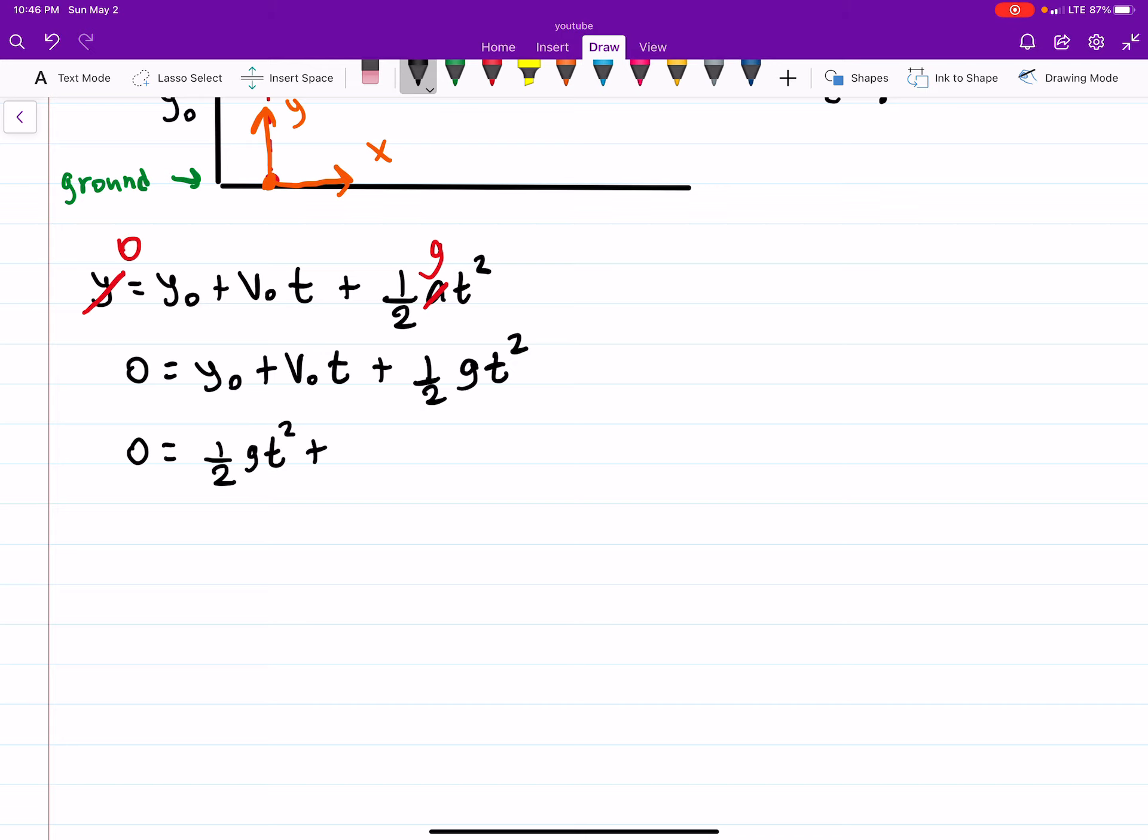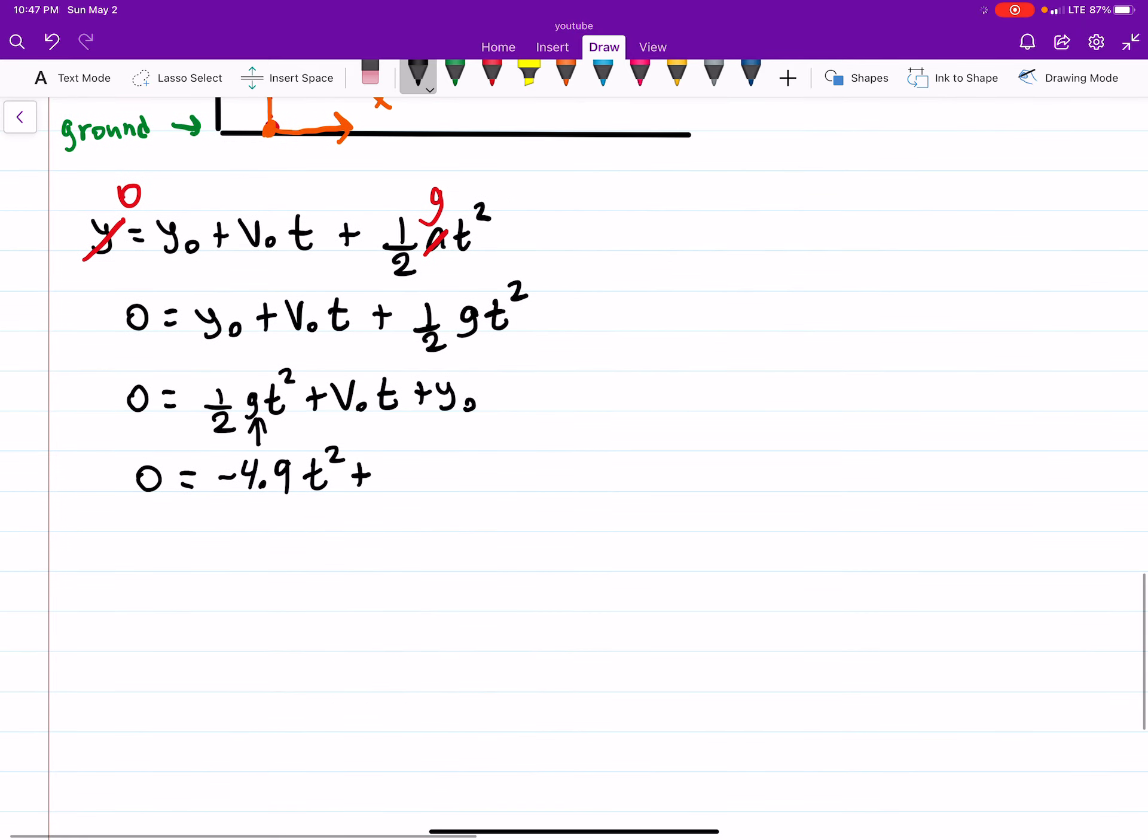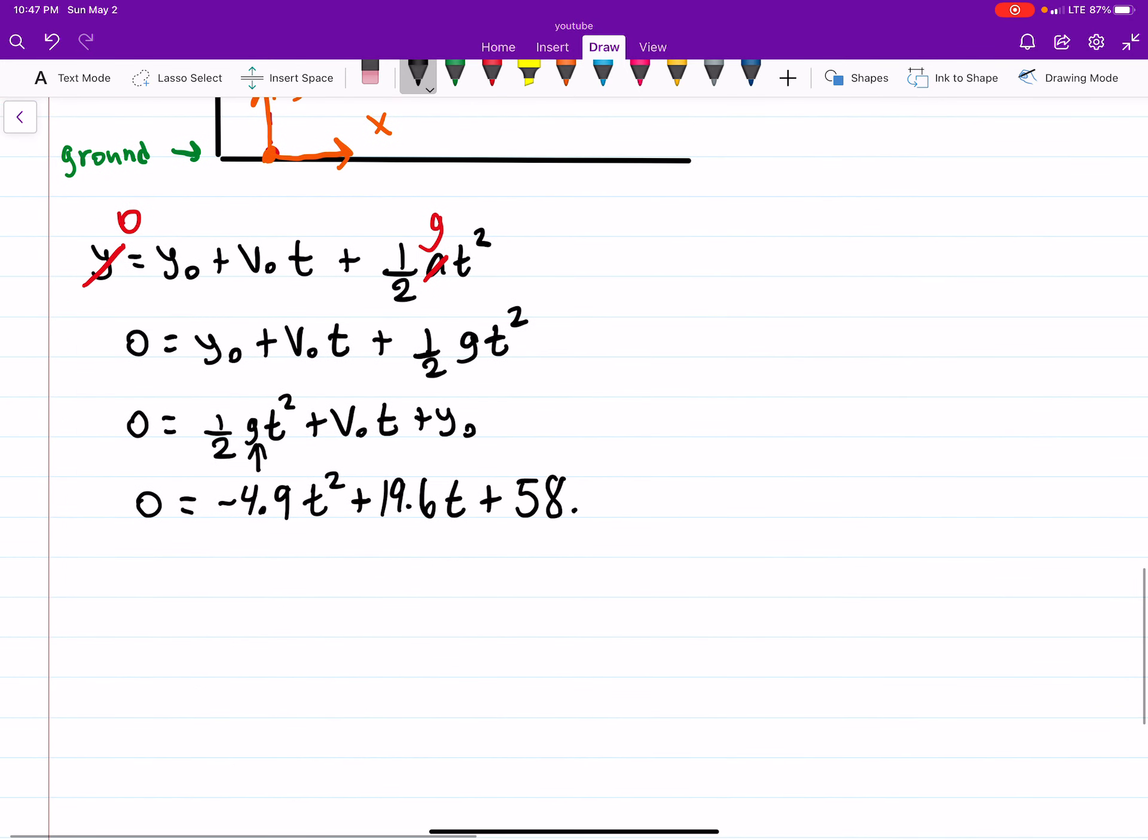So we have 0 equals Y-naught plus V-naught T plus 1/2 GT squared. I'm going to rewrite this from descending order, which you might be a little bit more familiar with. Our power of T is going down. This is just a quadratic. If we plug in, that'll be minus 4.9 T squared. If you take 9.81 divide it by 2, plus our initial velocity 19.6 T, plus our height of 58.8. This is really just a pre-calc problem at this point. This is just a quadratic equation.